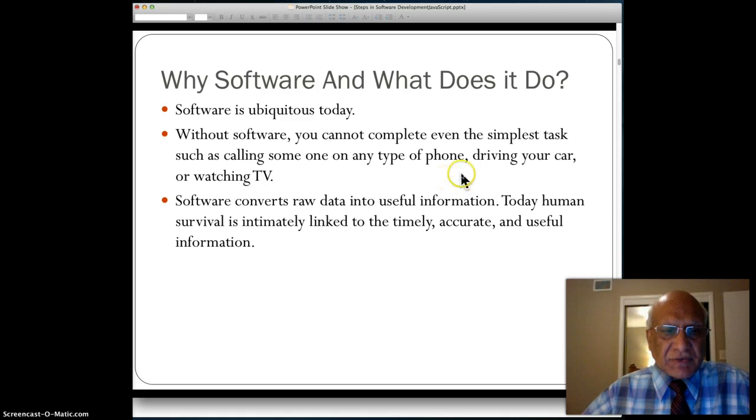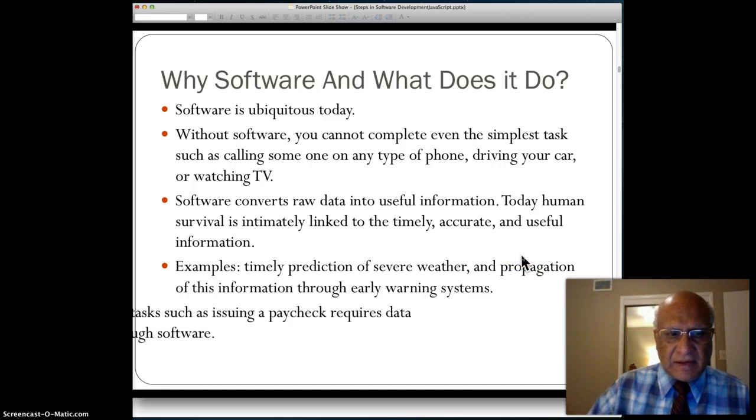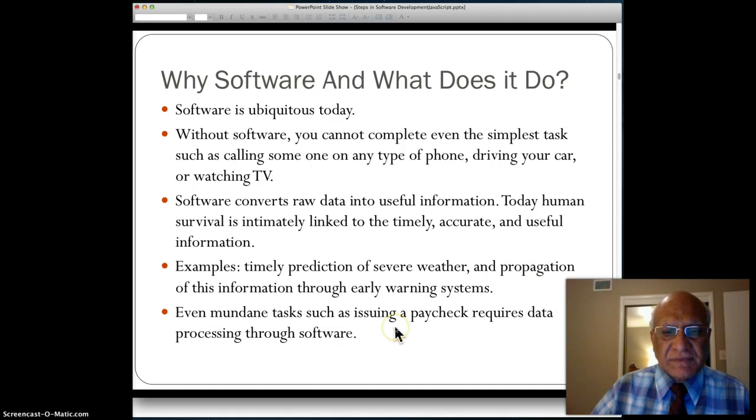Basically, what does software do? It converts raw data into useful information. Today, human survival is intimately linked to timely, accurate, and useful information. For example, timely prediction of severe weather and propagation of this information through early warning systems has become very essential. Even mundane tasks such as issuing a paycheck requires data processing through software.